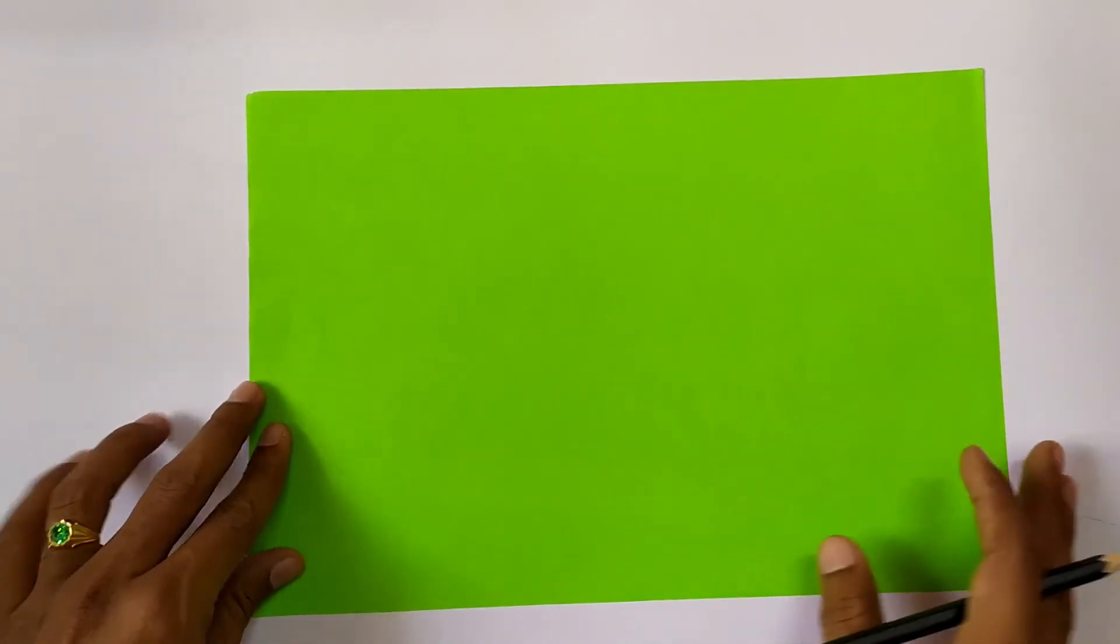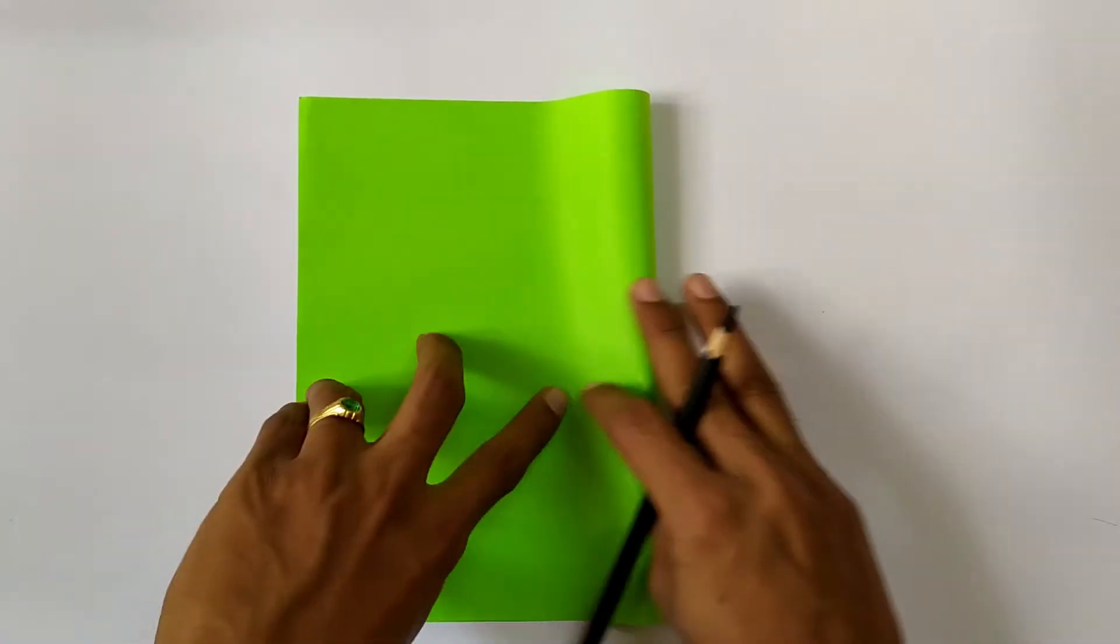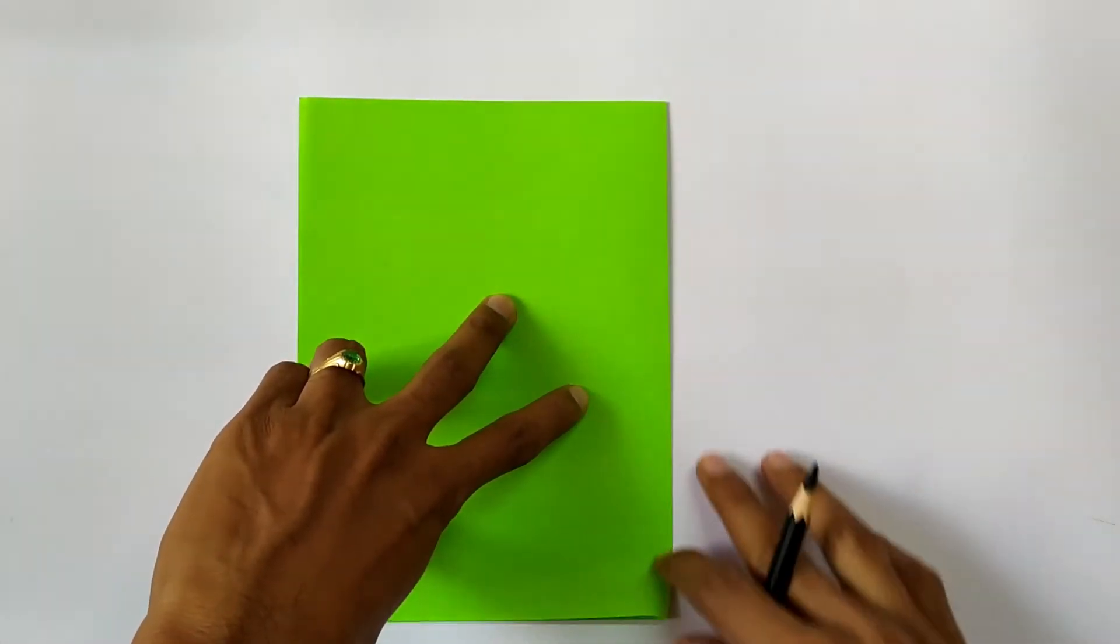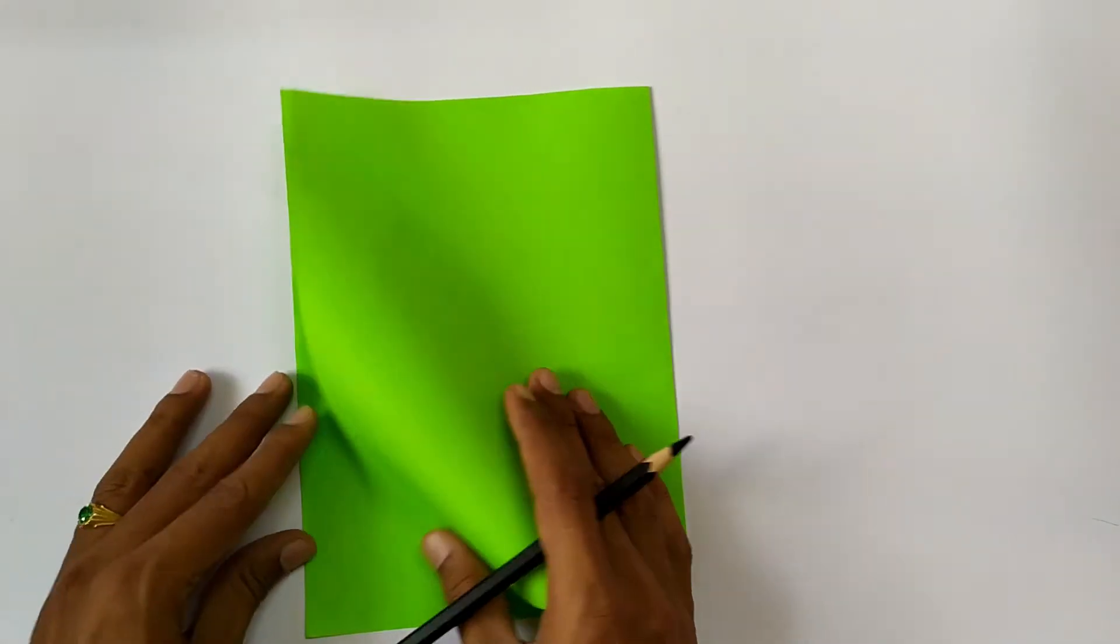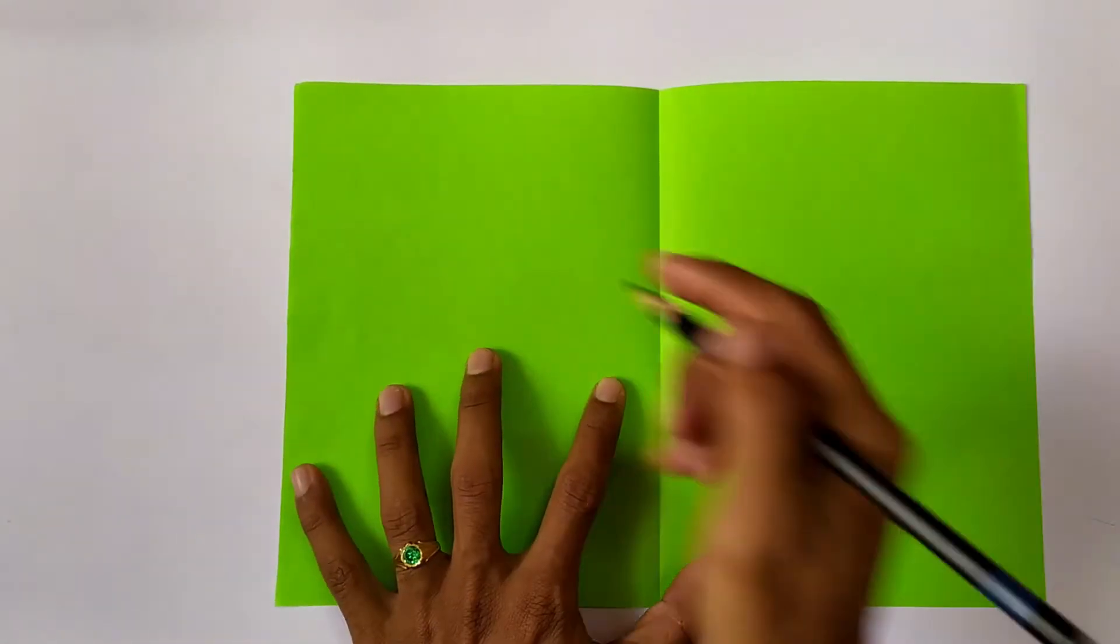Now we will go with the procedure. See, first take a paper and then fold it half to get a line exactly at the center like this. Got a line, right? Now you need to make it left side and then right side.